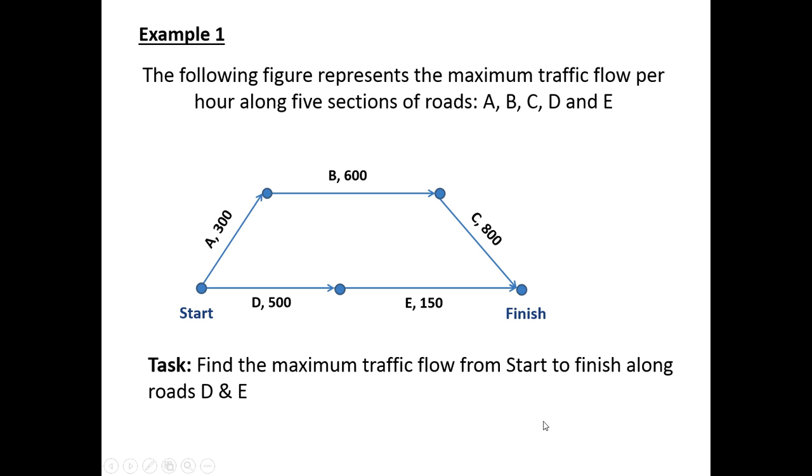So road D can travel up to 500 vehicles per hour and it flows directly into road E. However road E can only travel 150 vehicles per hour. This might for example be a double or triple lane that merges into a single lane. Now accordingly the maximum flow we can get from start to finish following roads D and E is 150. It doesn't matter if we have 500 vehicles traveling along section D.